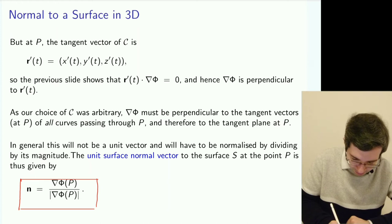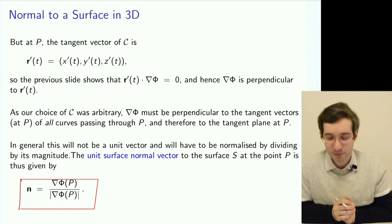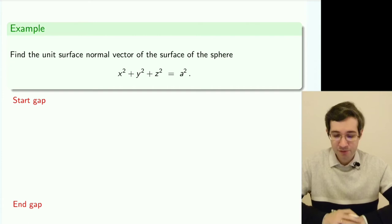So that is the unit normal to the surface at point P. You take its gradient in the implicit form, substitute the point, and divide by the absolute value of that gradient by its magnitude. Let's look at an example.